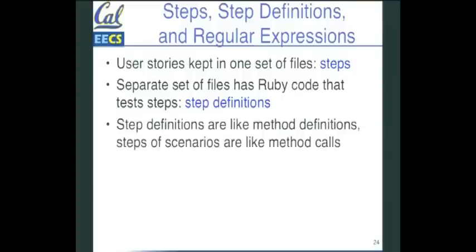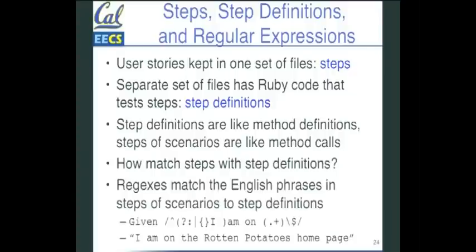And you can think of the relationship here as like the relationship between method definitions and method calls. So the method definitions are the step definitions and the steps of a scenario, steps of the scenarios are like method calls. So that's the relationship there. And how do we cross that barrier? How do we cross the gap between the steps and the step definitions? We're using regular expressions.